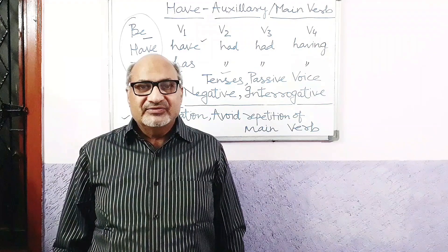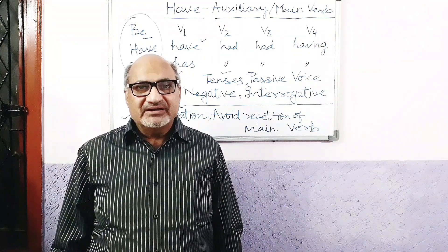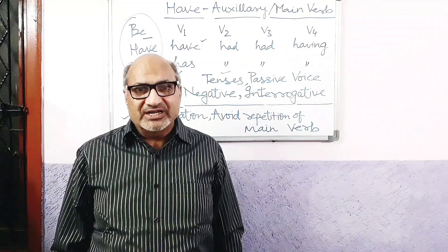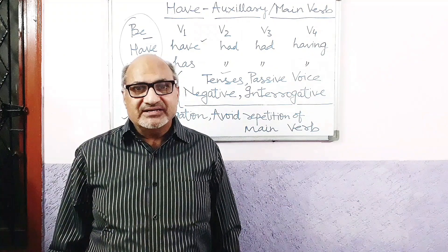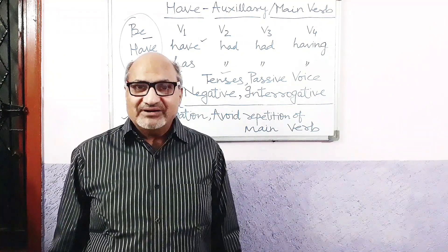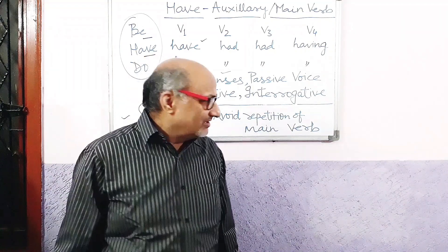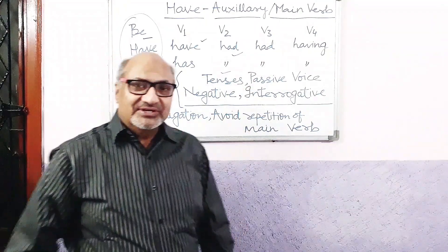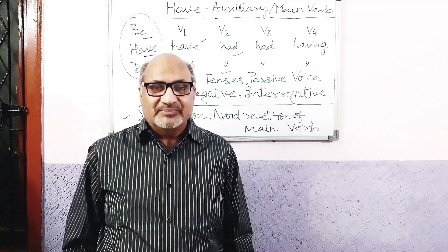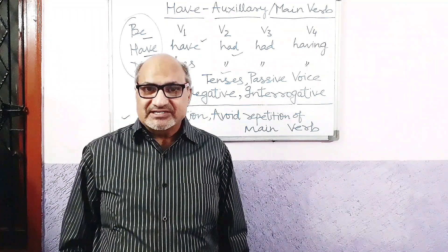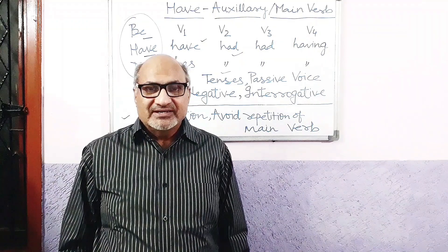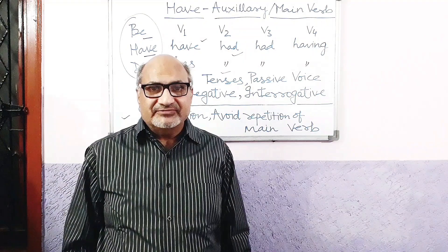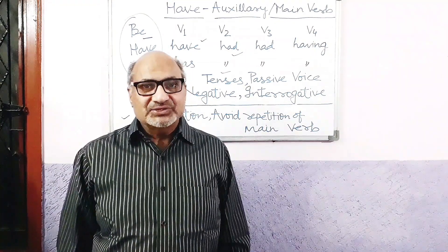Future perfect continuous examples: 'They will have been writing a letter for four days next Monday.' 'They won't have been writing a letter for four days next Monday.' 'Will they have been writing a letter for four days next Monday?' The next point: 'had' — the second form — is used as auxiliary for the past perfect and past perfect continuous tenses. Past perfect: 'They had written a letter.' Past perfect continuous: 'They had been writing a letter for two hours.'